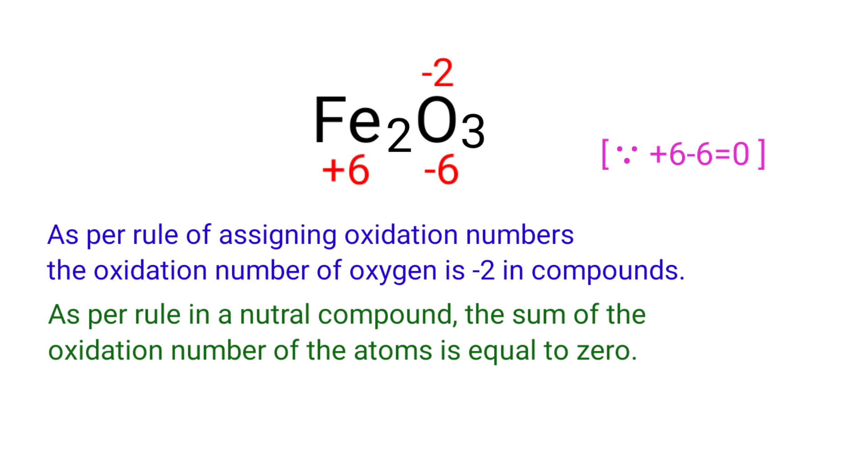In the Fe2 element, there are two iron atoms present. So we can write the oxidation number of the iron is plus 3.